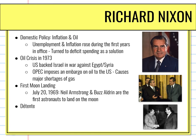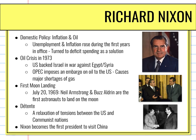Nixon also adopted a policy known as détente. We started to see a relaxation of tensions between the United States and other Cold War communist nations, the biggest being the Soviet Union. He visited the Soviet Union and spoke with Moscow. He also became the first president to ever visit China, another large communist nation.